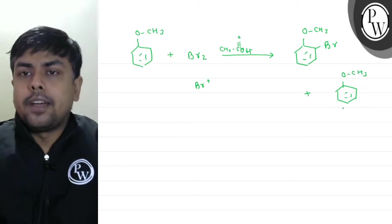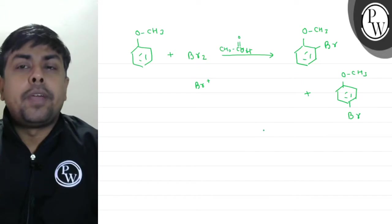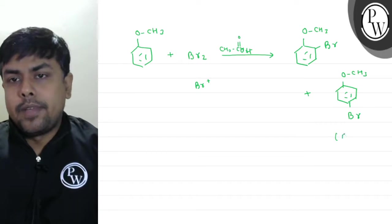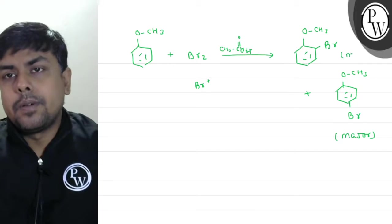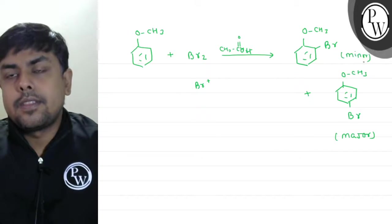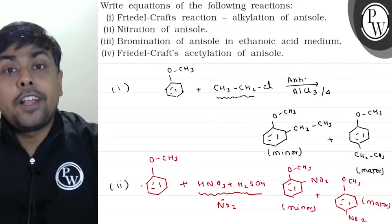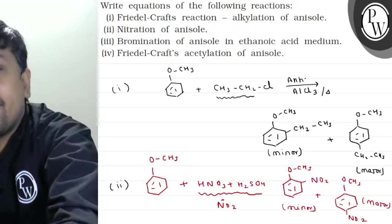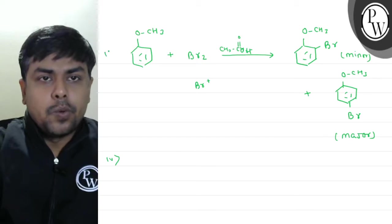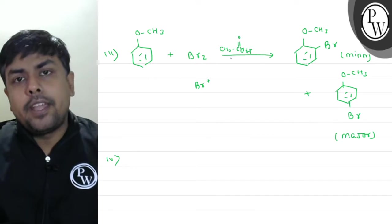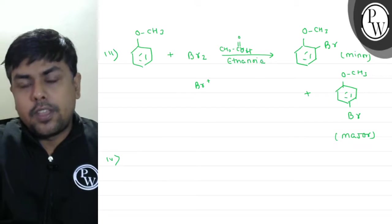O-C-H-3, Br. Again, major will be the para one. This is major and this is minor. If I talk about the next reaction, that is Friedel-Crafts acylation of anisole. The fourth one is acylation reaction. This was the third one: anisole treated with bromine in the presence of ethanoic acid. I am writing it: ethanoic acid.